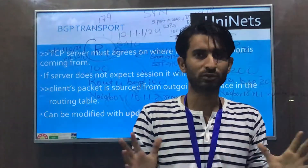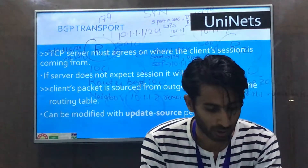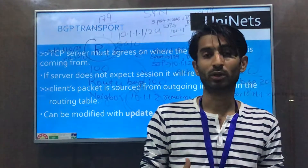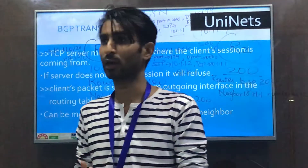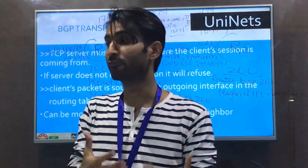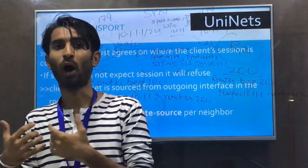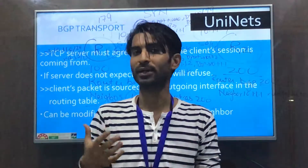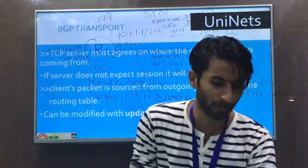The router will send a RST and refuse to form the neighborship. When we form neighbors using loopback addresses, we need to change the source IP using the 'update-source' command. This overrides the default exit-interface-based source selection. We will see this command in action when we configure loopback-based neighbors.